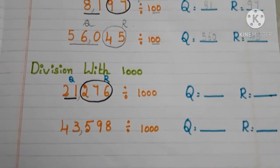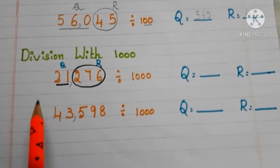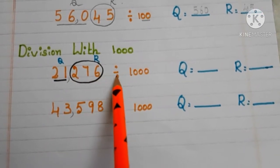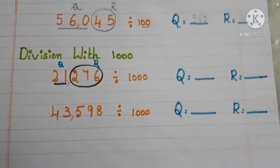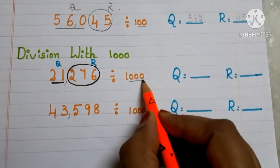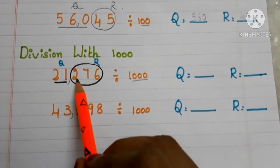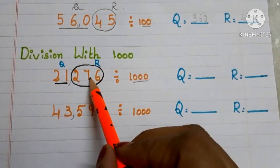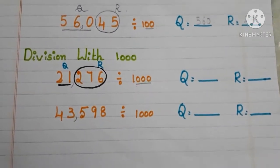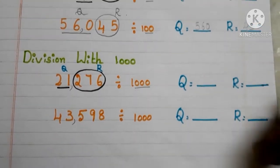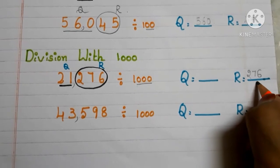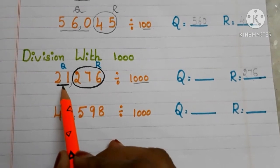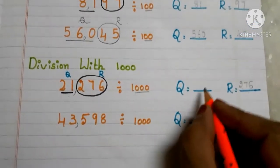Now let us move to division with 1000. Here we have our first example: 21,276 divided by 1000. In the number 1000, how many zeros are there? Three zeros are there. So the last three digits — the digits in the one's place, ten's place, and hundred's place — become the remainder. The remainder here is 276. The remaining digits become the quotient, which is 21.